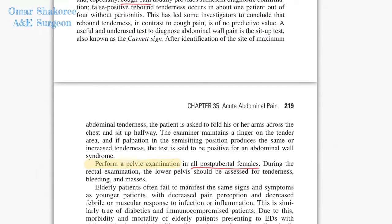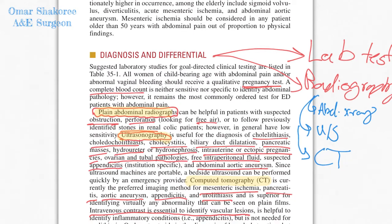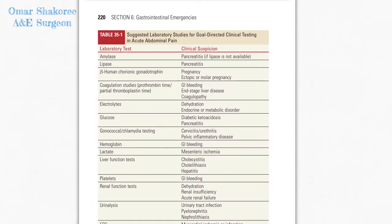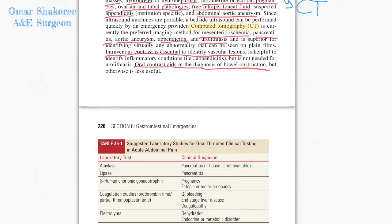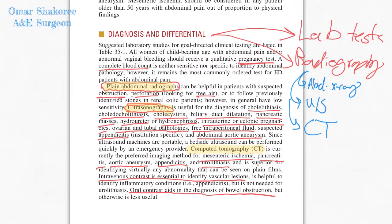After that, you have to know what investigations you will send in patients with acute abdominal pain. There are many investigations, like lab tests. I will share with you this picture, which shows suggested laboratory studies for gold standard or goal-directed clinical testing in acute abdominal pain. After that, the important ones are the radiograph, abdominal X-ray, ultrasound, and CT scan.